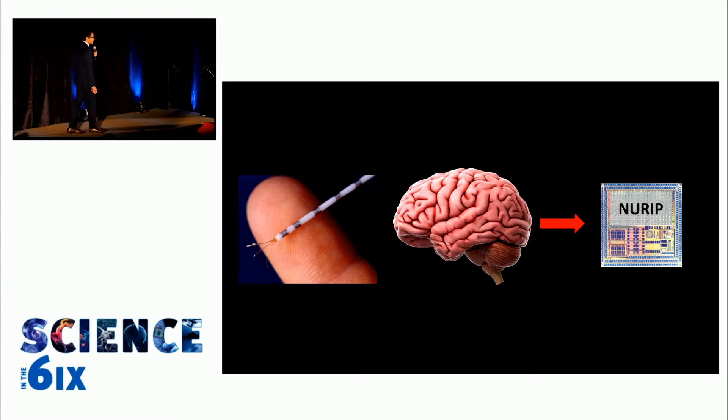Epilepsy surgery is like real estate. It's location, location, location. And so we very strategically implant electrodes within the brain to understand where the seizures are coming from.